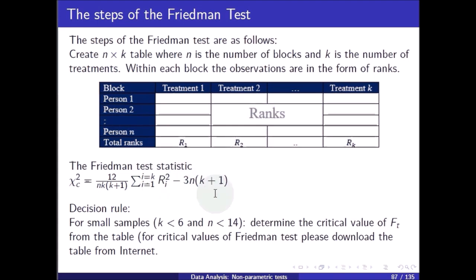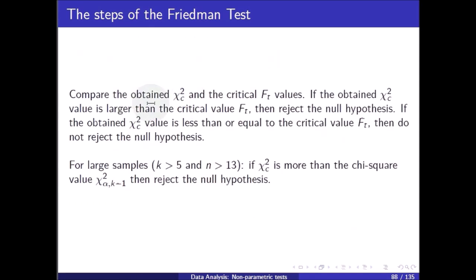For small samples — say k less than 6 and n less than 14 — determine the critical value of the Friedman test statistic from the Friedman table. Compare the obtained chi-square value and the critical value: if the obtained value is larger than the critical value, then reject the null hypothesis.